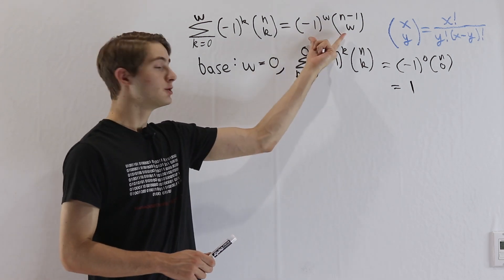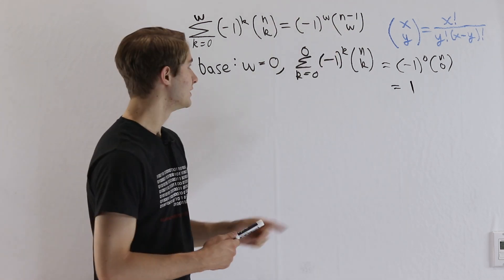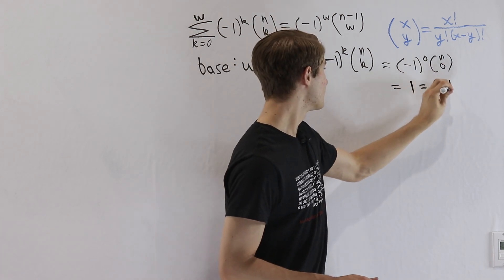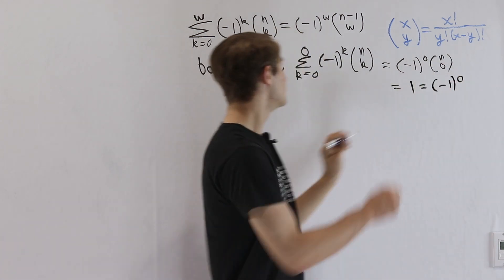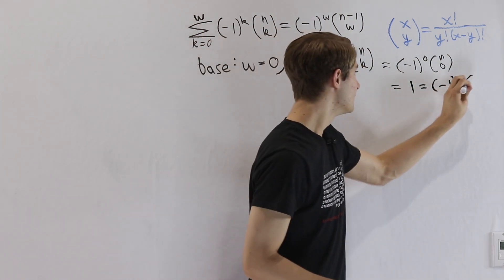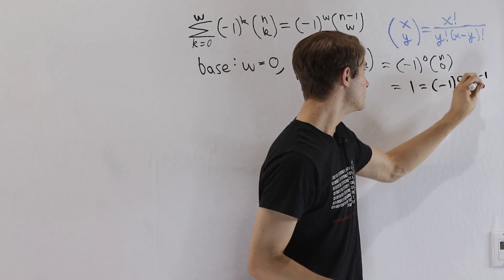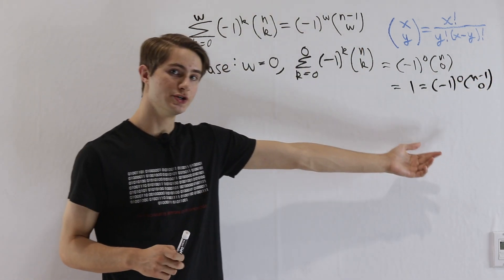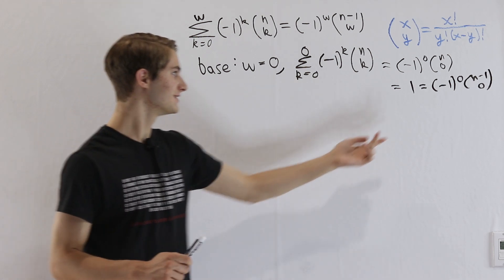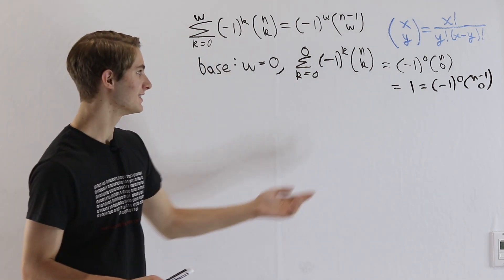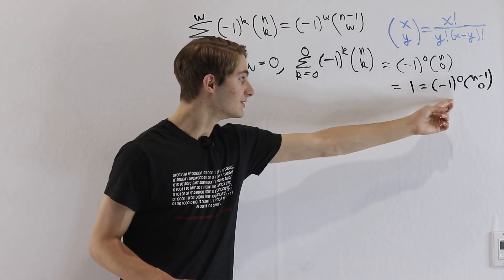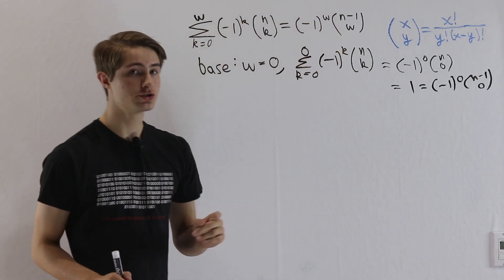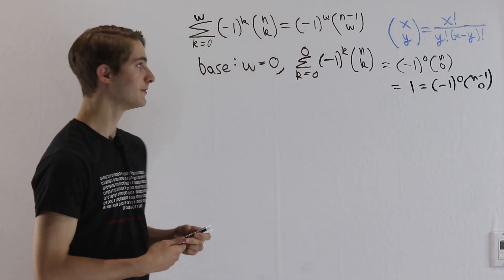The question is, is it equal to what we want on the right-hand side? Let's plug in w equals 0 on this side and see what it gives. We get negative 1 to the 0, and then n minus 1 choose 0. Is n minus 1 choose 0 equal to 1? Yes. Is negative 1 to the 0 equal to 1? Yes. So this is true, and therefore we prove that this identity is true for when w equals 0.